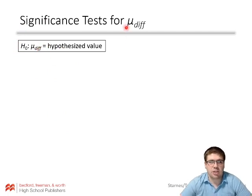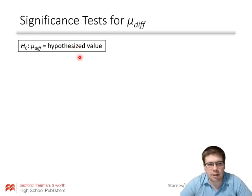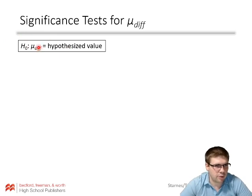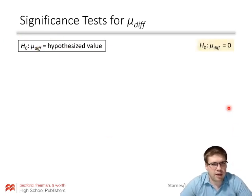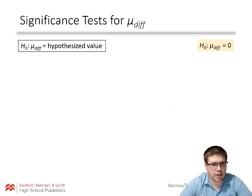Our null hypothesis — when we did our one-sample t-test before, we'd have some mu equals some number. This one will very frequently be that there's no difference, so we can have a difference equals a hypothesized value. The vast majority of the time we'll be assuming that difference is zero: the null hypothesis is that the average difference for all those matched pairs is zero, and then we'll see if it's significantly greater than, less than, or not equal to zero.